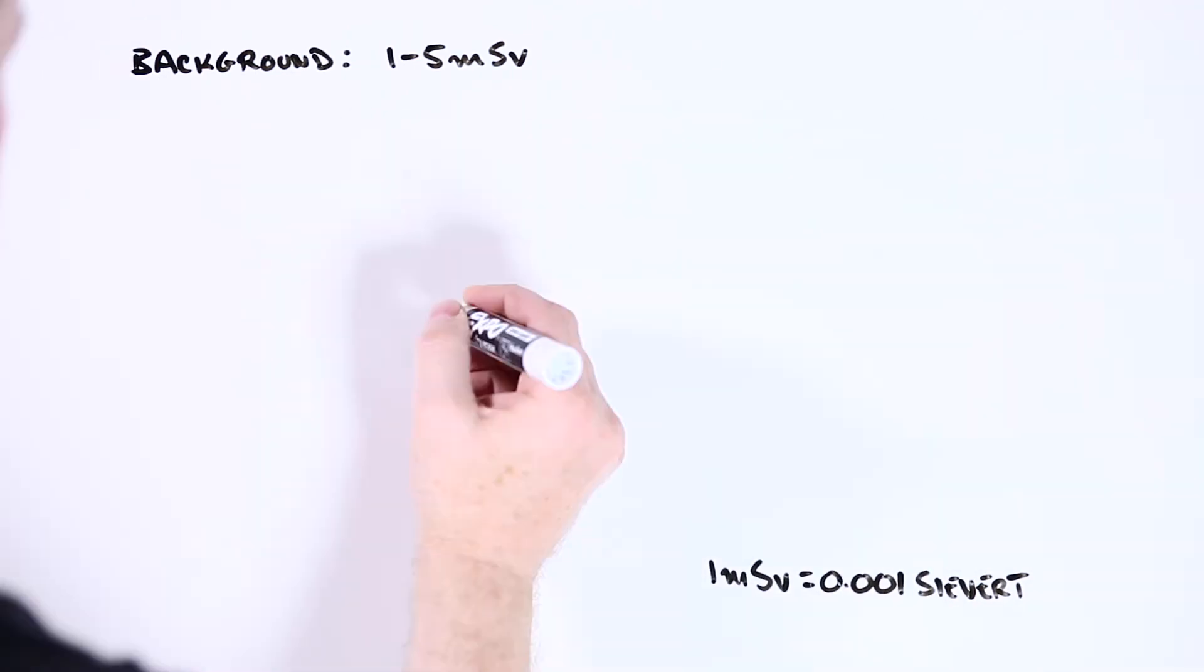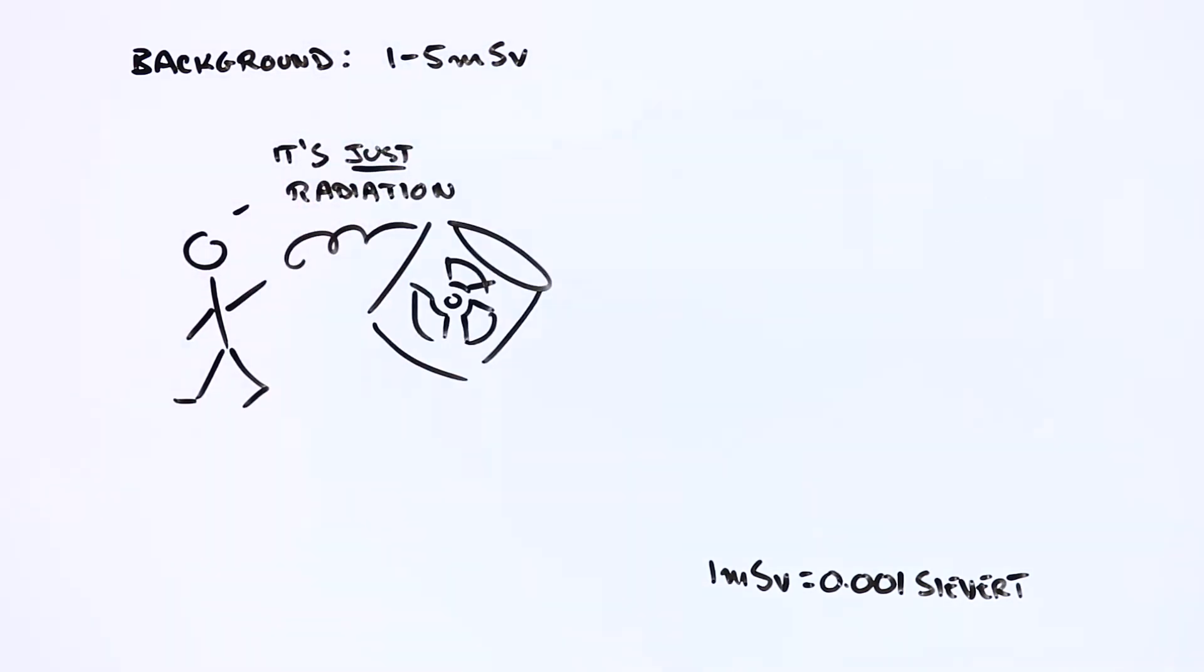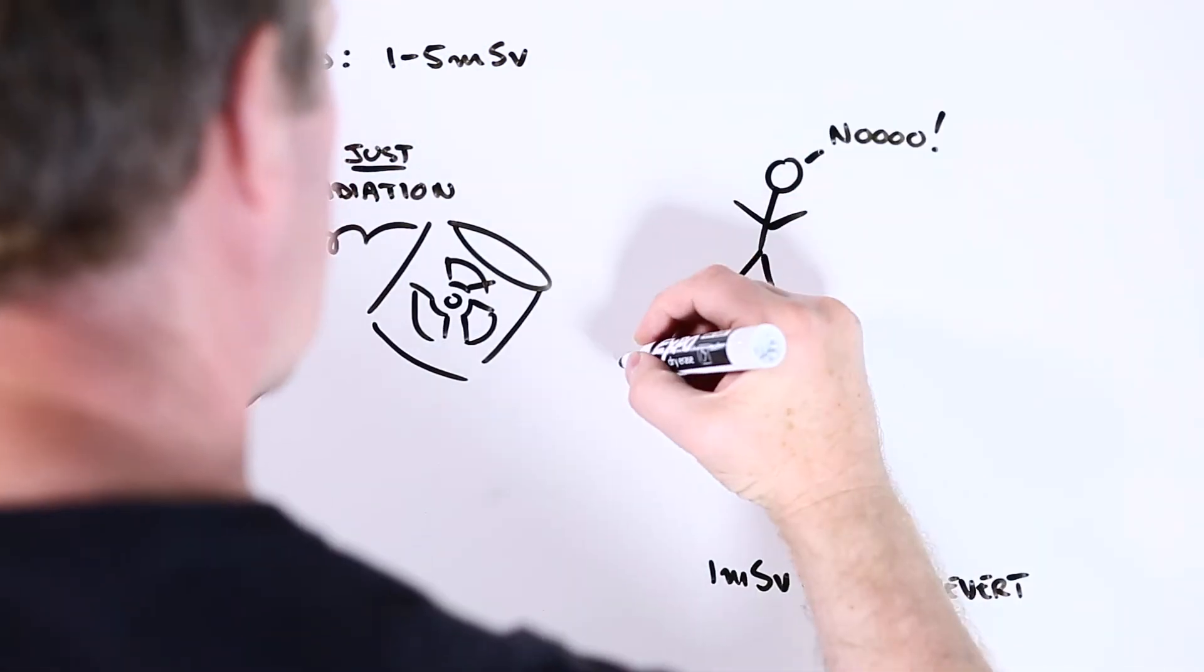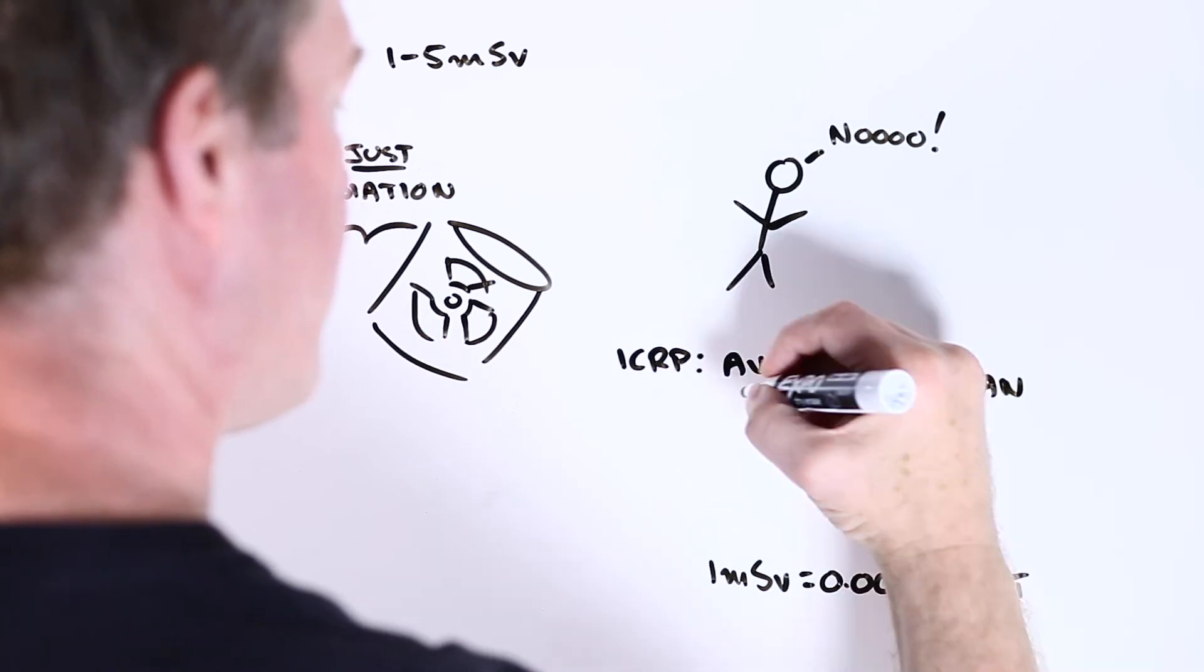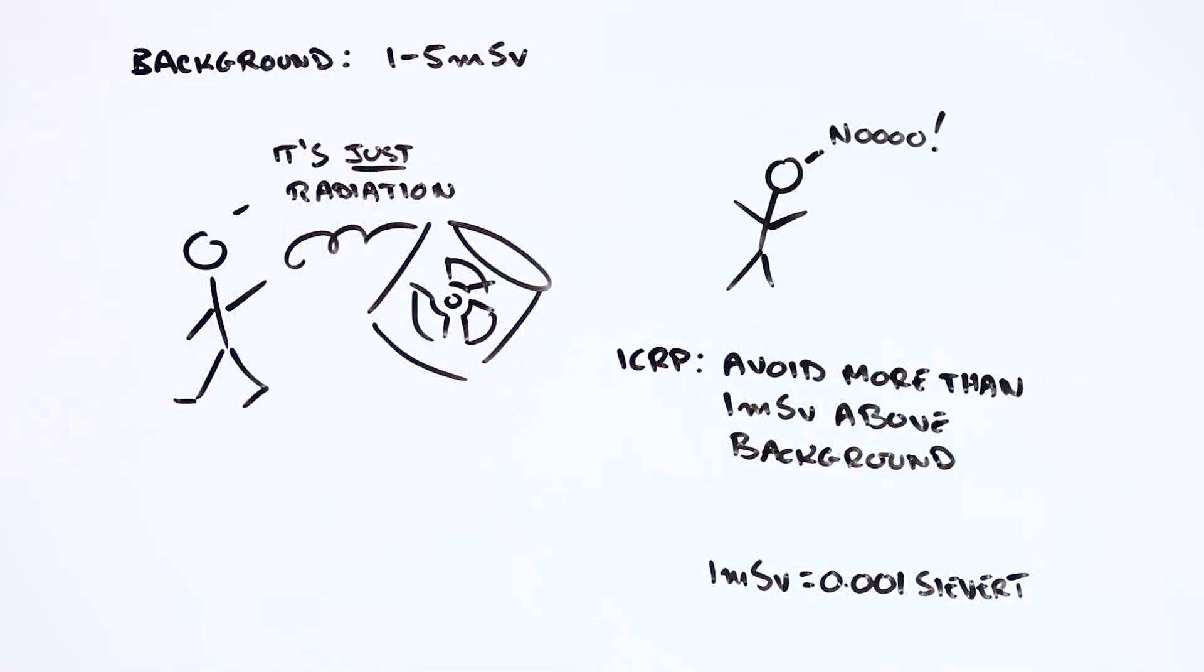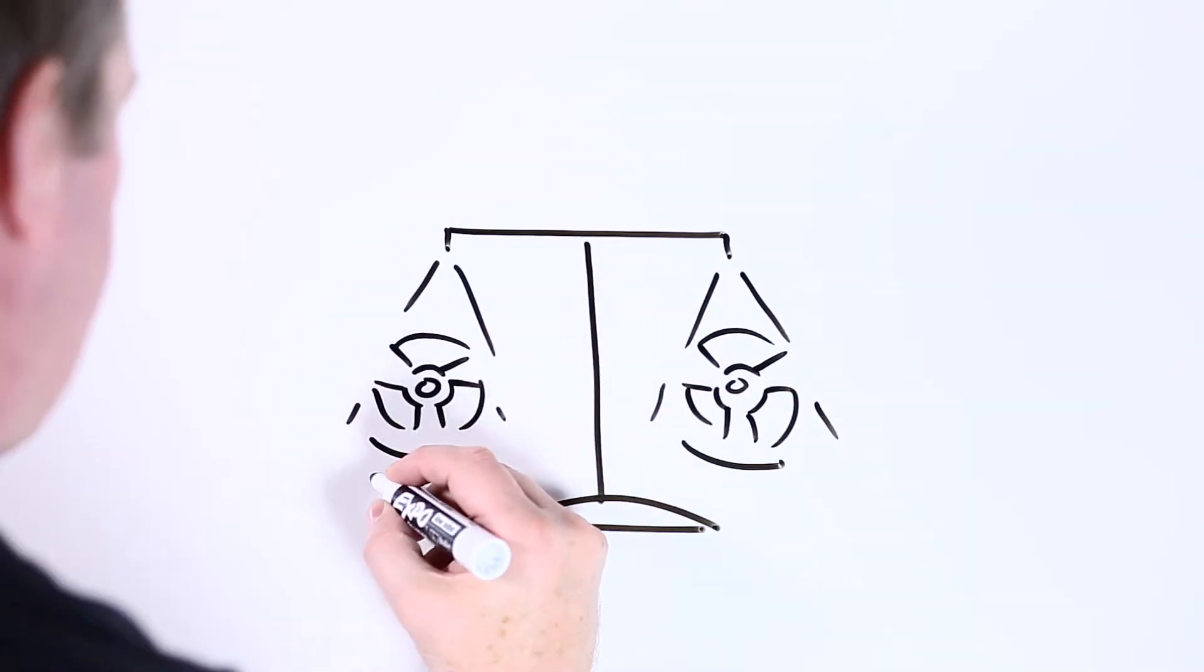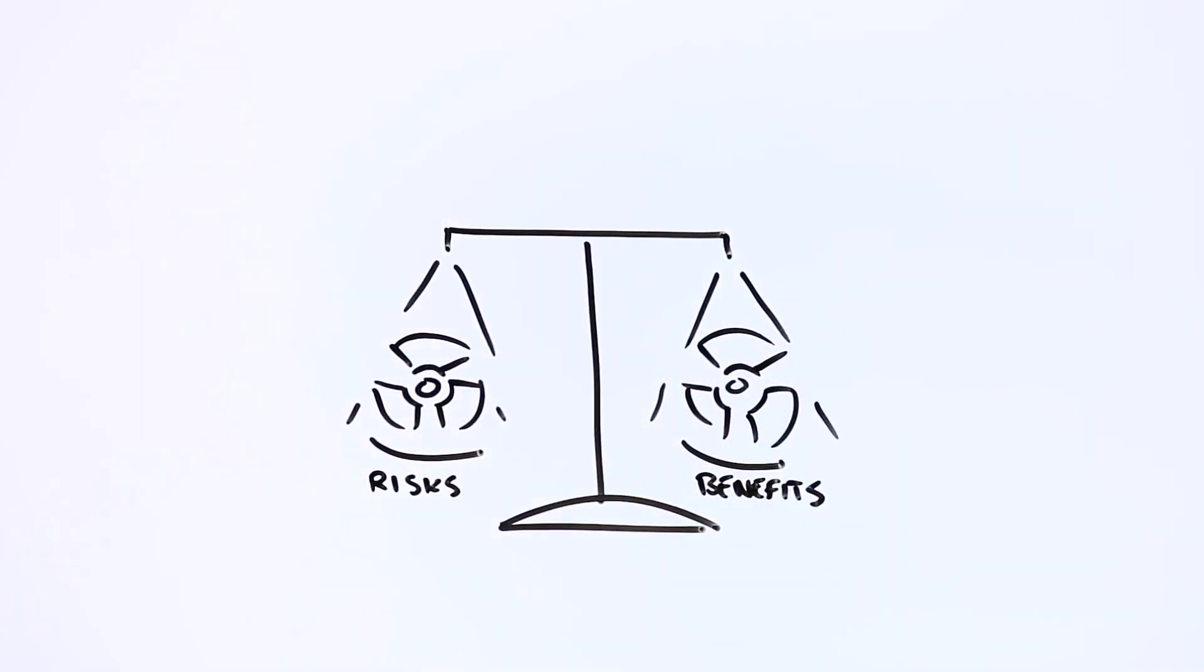This doesn't mean we can afford to become complacent about radiation, though. And the International Commission on Radiological Protection recommends not exceeding background radiation levels by more than one thousandth of a sievert per year. But at least sieverts help us weigh up the pros and cons of radiation exposure, and they allow us to differentiate between exposures that are probably okay and those that are not.